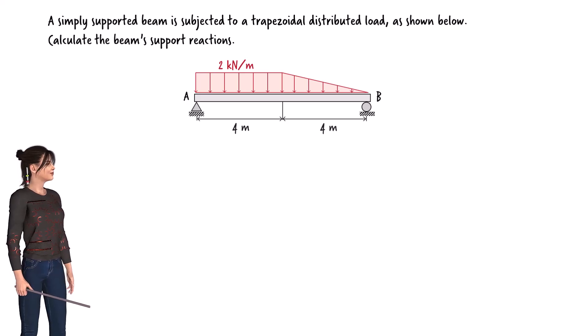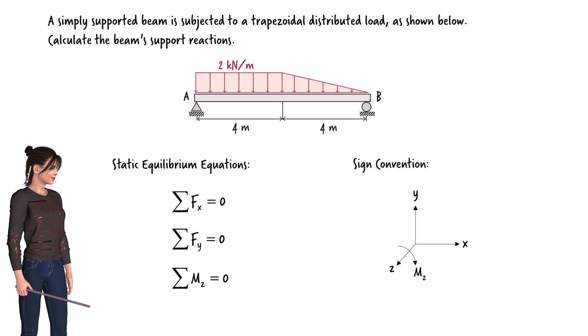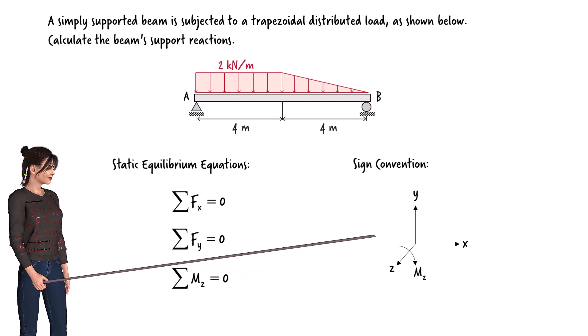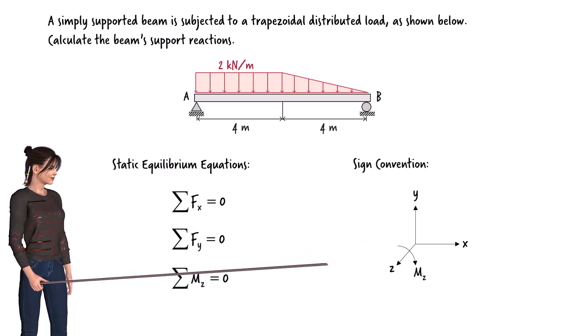We wish to calculate the support reactions of a beam subjected to a trapezoidal load. Given that the beam is statically determinate, we can analyze it using the static equilibrium equations. This diagram shows the assumed positive directions of forces and bending moments.